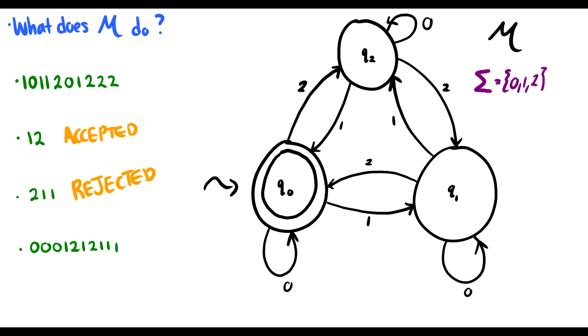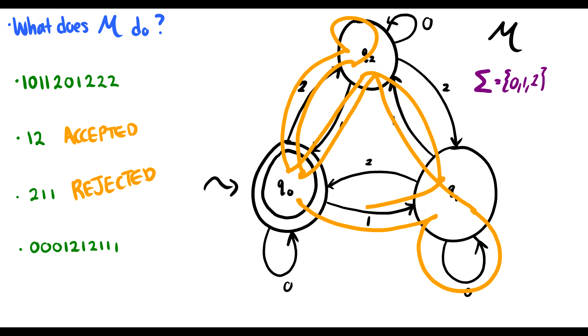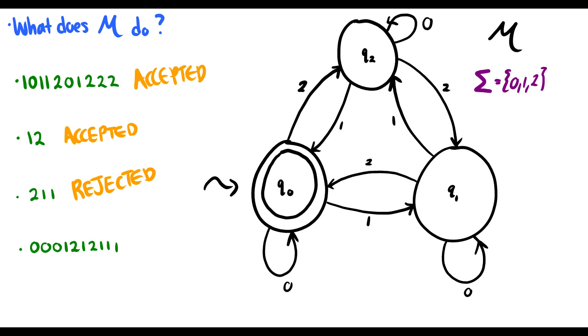1, 2 is accepted. 2, 1, 1 is not. Let's do 1, 0, 1, 1, 2, 0, 1, 2, 2, 2. This is going to look like a mess. So we start at Q0. We go 1, so we go to Q1. We take a 0, so we go back to Q1. We use a 1, so we go to Q2. A 1 takes us back to Q0. We take a 2 to Q2. A 0 loops us around. A 1 takes us back to Q0. A 2 takes us to Q2. A 2 takes us to Q1. And another 2 takes us back to Q0. So this is accepted. And we have a huge, huge mess here. It'd be nice if we didn't have to draw all those lines to figure out where we're going.